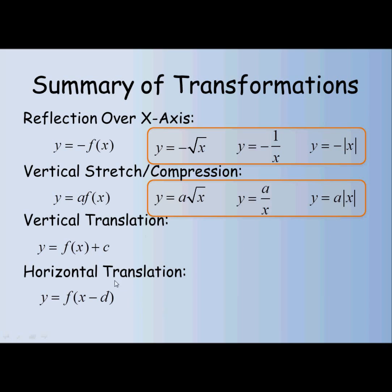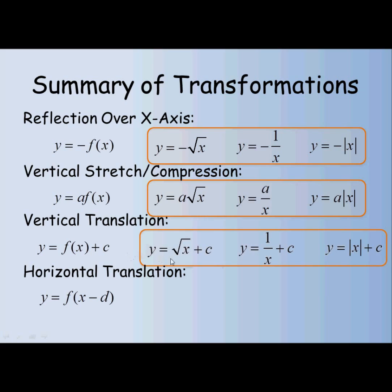We've got vertical translations and horizontal translations. Vertical translations happen when we have our parent function and then add a value c after it — we're moving up if c is positive, or down if c is negative. For the square root function, that looks like the square root of x plus c. For the reciprocal function, y equals 1 over x plus c. And for the absolute value function, y equals the absolute value of x plus c — same idea.